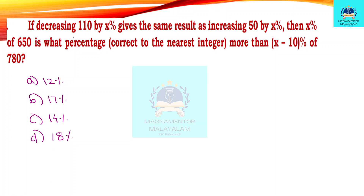First problem: if decreasing 150 by x percentage gives the same result as increasing 50 by x percentage, then x percentage of 650 — what percentage will this be more than x plus 20 percentage of 90?